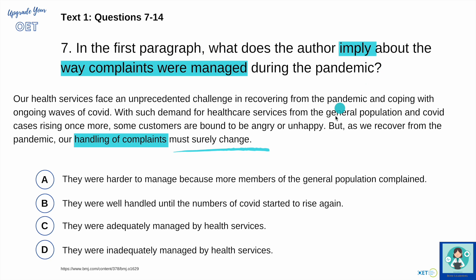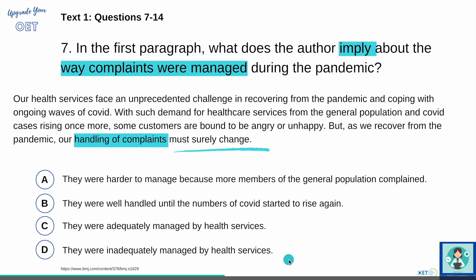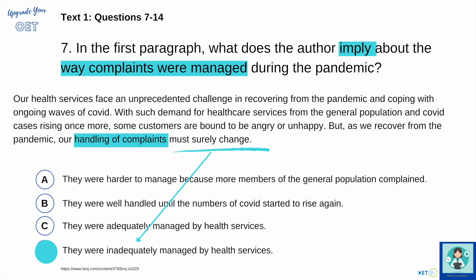Looking at the options: A says they were harder to manage because more people complained — I didn't read anything about more complaints. B says they were well handled until COVID numbers rose — but why change something well handled? C says they were adequately managed — again, you'd only want change if things weren't working. So the answer is D: complaints were being inadequately managed by healthcare services. That is the correct answer.